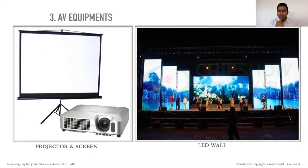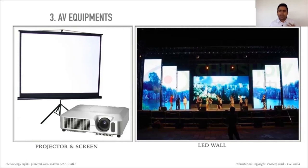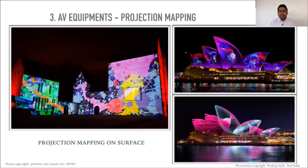You might see what looks like a circular display, but it's actually a square or rectangular LED wall with a frame mounted in front, and the VJ customizes the artwork to match that circular area. It all depends on how creatively you use it. The third AV technology that has taken the industry by storm is projection mapping.